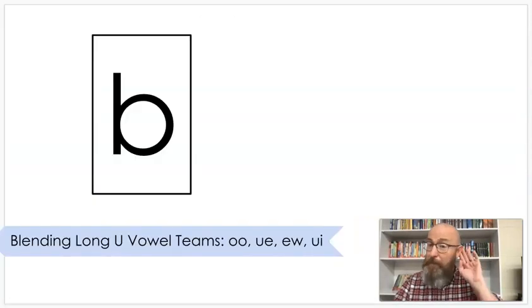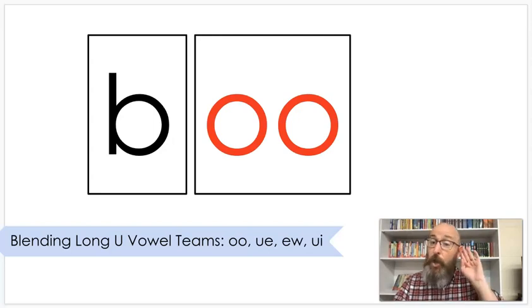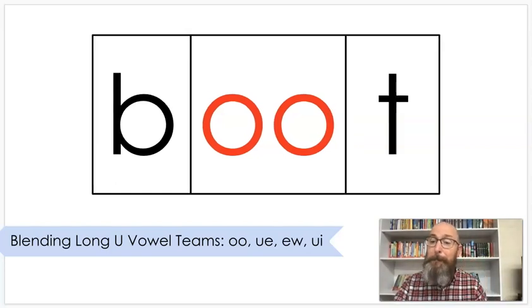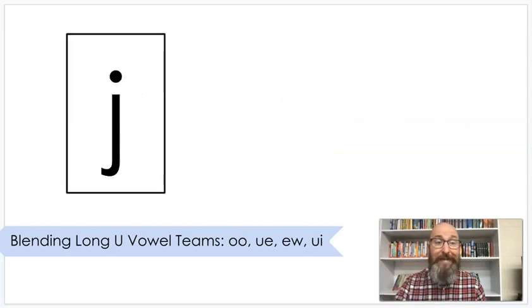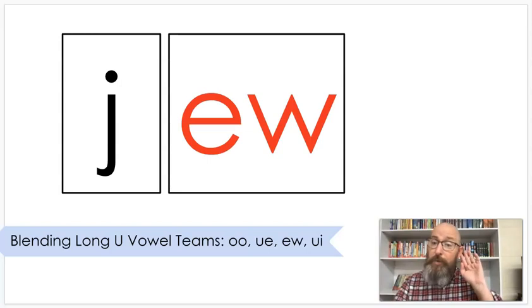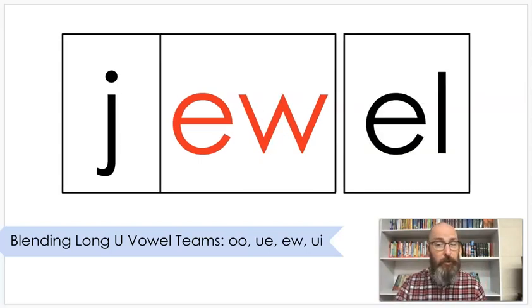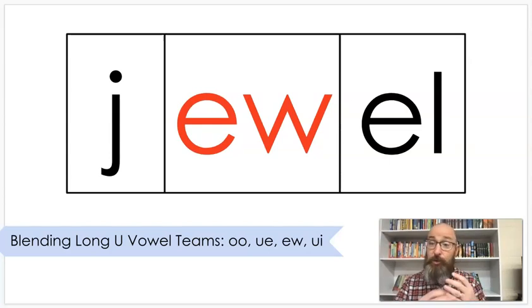Sound B, Sound OO. Put that together. Boot. Boot. You might wear a boot on your foot. Sound J, Sound OO. Put that together. Jewel. Jewel. You may have some jewels on some rings or earrings.